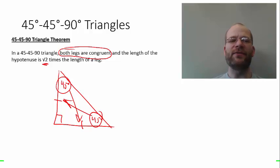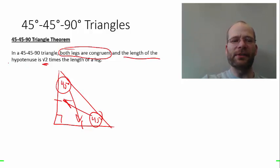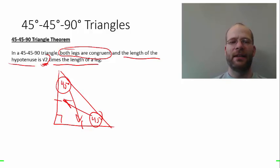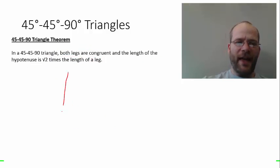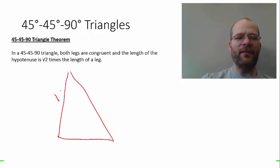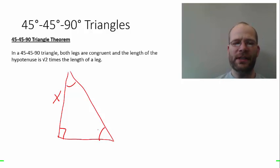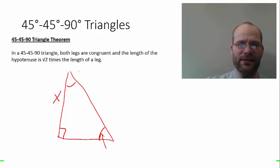The fact that we have two 45-degree angles tells us that we also have two congruent legs. Now let's look at the second part: the length of the hypotenuse is square root of 2 times the length of a leg. In order to prove that, let's look at a triangle and assign a random value x for the length of one of the legs, and assume this is a 45-45-90.